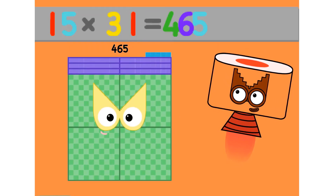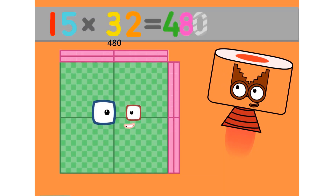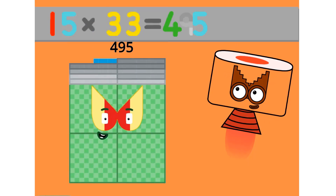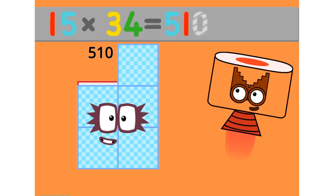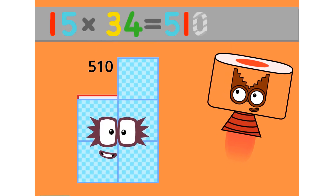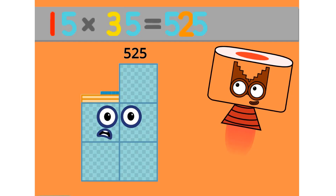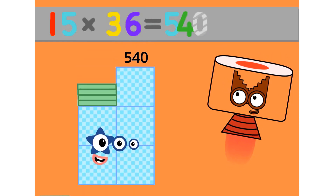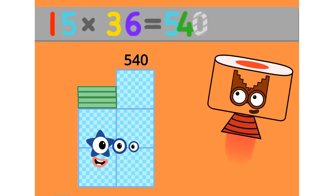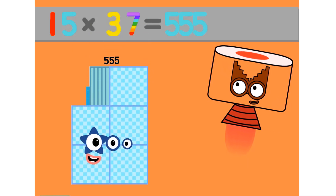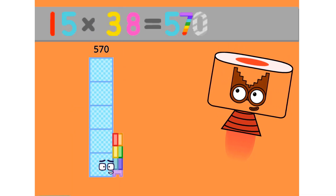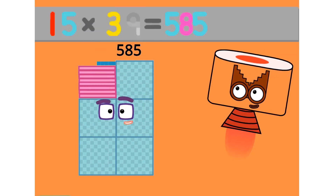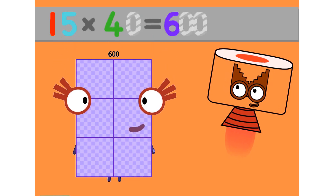15 times 31 equals 465. 15 times 32 equals 480. 15 times 33 equals 495. 15 times 34 equals 510. 15 times 35 equals 525. 15 times 36 equals 540. 15 times 37 equals 555. 15 times 38 equals 570. 15 times 39 equals 585. 15 times 40 equals 600.